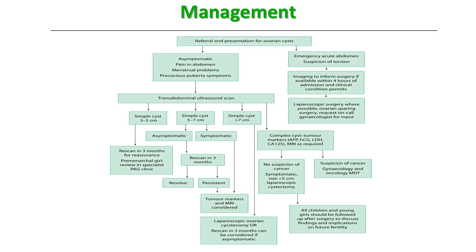Here is a flowchart summarizing the management. For presentation with acute abdomen — strong suspicion of ovarian torsion — proceed with imaging to inform surgery if available within 4 hours of admission and the clinical condition permits; perform laparoscopic surgery wherever possible with an ovarian-sparing approach and request on-call gynecologist input. If the presentation is incidental or with non-acute pain, menstrual problems, or precocious puberty symptoms, perform a transabdominal ultrasound. Most cysts — around 60% — are simple cysts, which are managed according to size.